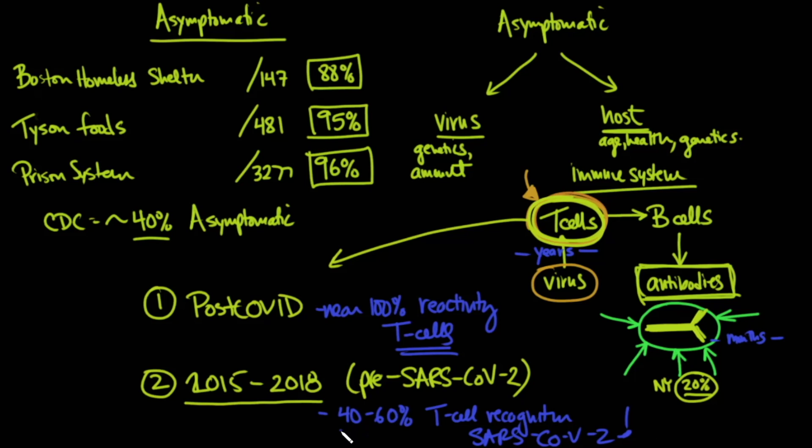And what they found in the first population should not surprise you. They found near 100% reactivity in the T cells. But what they found in 2015 to 2018, again, this is before the pandemic, what they found was that there was a 40 to 60% T cell recognition of the SARS-CoV-2 virus. Now, that's strikingly similar to what the CDC has been telling us about those patients that are asymptomatic. So realize that many of the proteins on the surface of the SARS-CoV-2 have similar structure to other coronaviruses, coronaviruses that have been around for many years that cause the common cold.